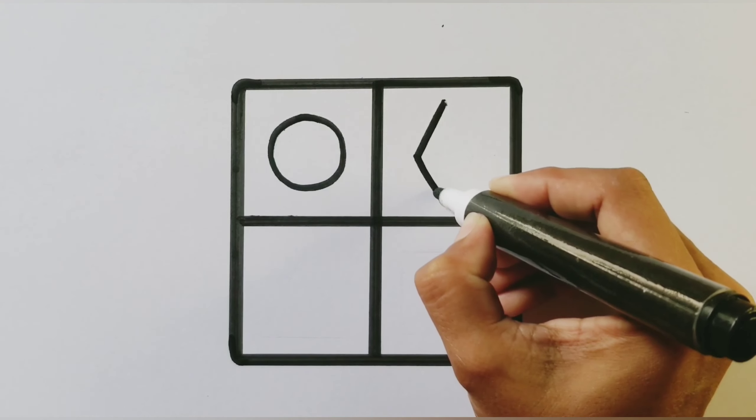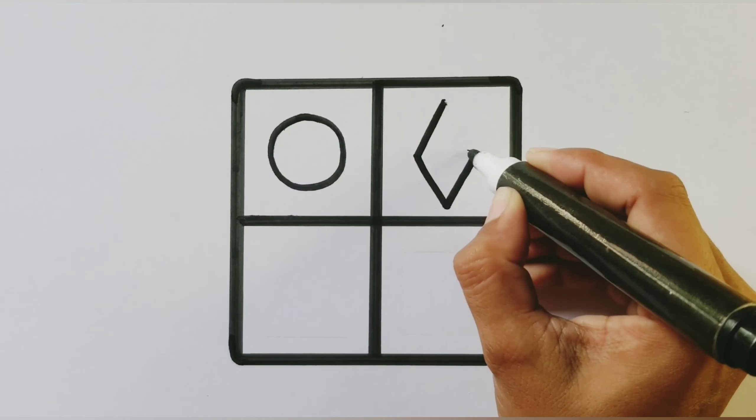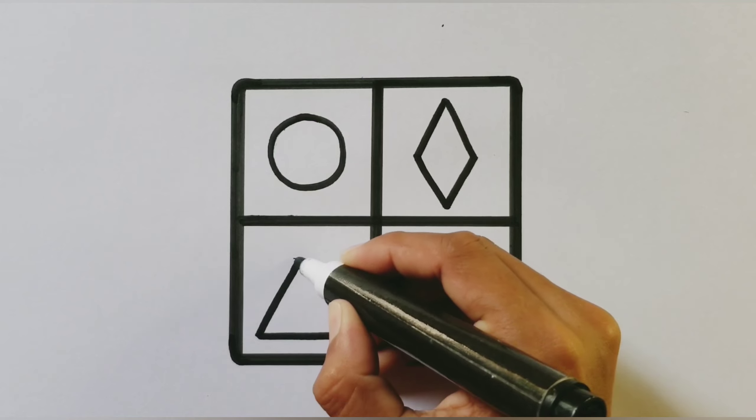I am drawing a diamond shape. And now I am drawing a beautiful small triangle shape.